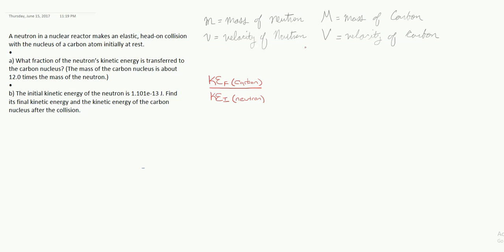There are all sorts of ways of doing this problem, but all of them involve some pretty crafty algebra. So a neutron in a nuclear reactor makes an elastic head-on collision with the nucleus of a carbon atom initially at rest.